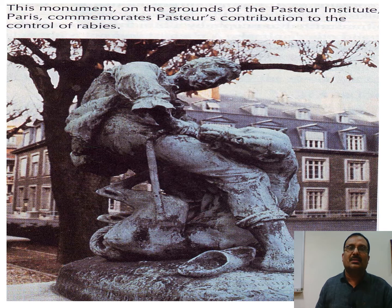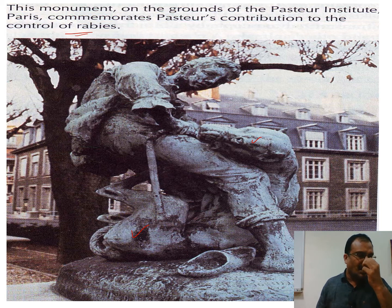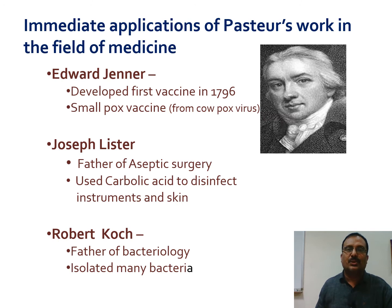There is a monument on the grounds of the Pasteur Institute in Paris to commemorate Pasteur's contribution to controlling rabies, showing a dog bite scene. Regarding immediate applications of Pasteur's work: Edward Jenner used his techniques and developed the first vaccine in 1796. He prepared the smallpox vaccine using the cowpox virus, since the cowpox and smallpox viruses share an almost identical antigenic structure. The vaccine prepared from cowpox was given to a boy to protect against smallpox.